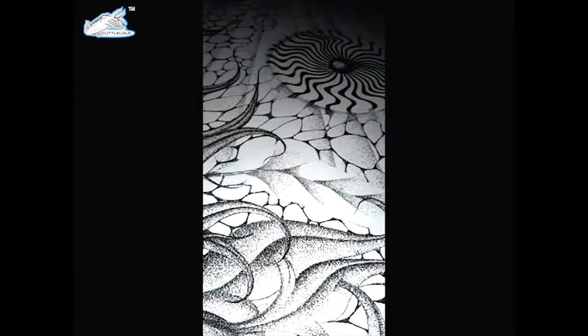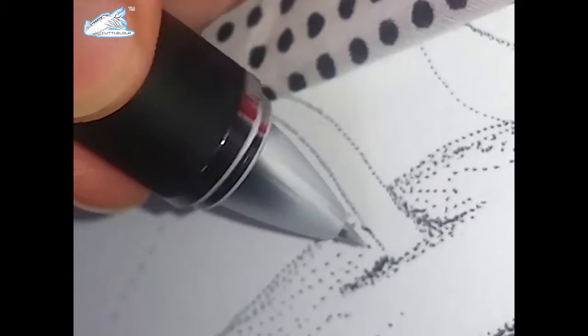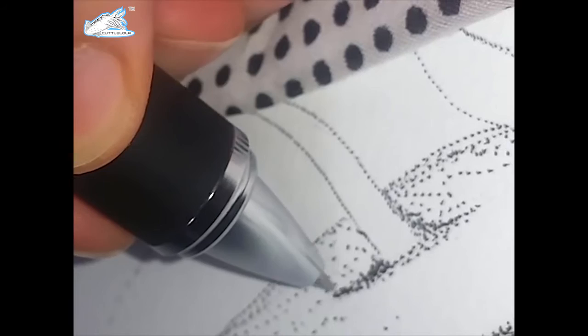No tool I have used to complete projects can cut down time like a Cuttlelola Dots Pen. This pen has two speeds and can put down thousands of dots in just minutes, not hours. And without this pen, I would not have been able to complete this 20 by 25 inch piece in just 10 days.